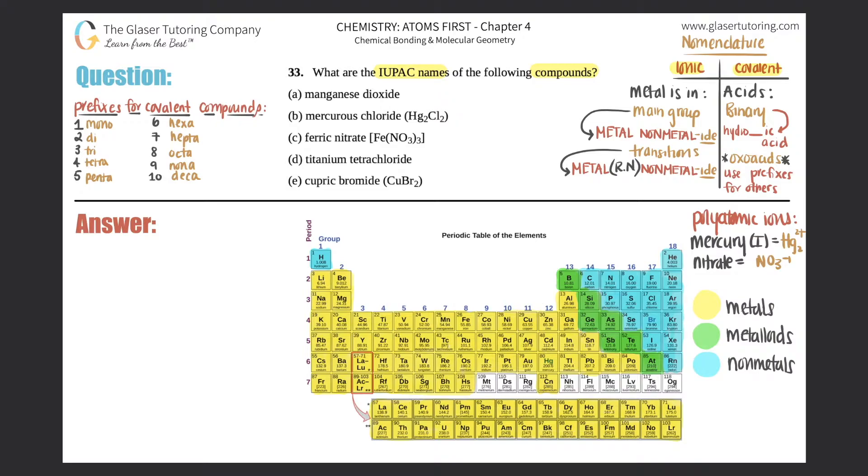Just know that the IUPAC names are the systematic names that we've been working with throughout this whole section. So whether we use a Roman numeral, we have to change the non-metal to IDE, that type of naming. So that means that basically A through E are not in their systematic names. They're not in their IUPAC names. So we first have to figure out what they are, and then we will put them in their IUPAC names.